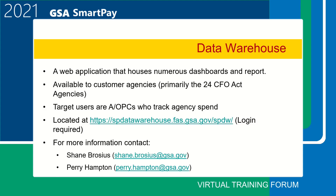The Data Warehouse is an electronic platform in which data is directly imported, aggregated, and normalized from contractor systems in order to allow analysis of GSA SmartPay spend and transactional data. This application houses numerous dashboards and reports that can be accessed via the web. It was developed using SAP Business Objects, and the dashboards and reports are dynamic in nature, allowing a user to access them via several dimensions such as agency, bureau, business line, and fiscal year. Dashboards available include purchase, travel, fleet, refund, and program metrics. Example reports include convenience checks and FSSI. The Data Warehouse is available primarily to the 24 CFO Act agencies.